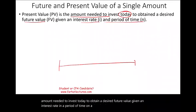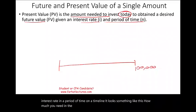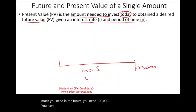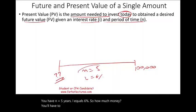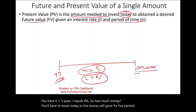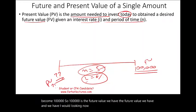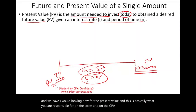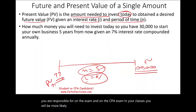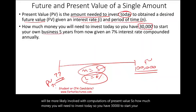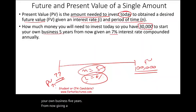On a timeline: you know how much you need in the future — say $100,000 — and you have n = 5 years and i = 6%. How much money do you need to invest today so it grows for five periods at 6% and becomes $100,000? On the exam and in your classes, you'll more likely be involved with computation of present value.